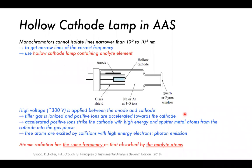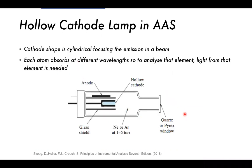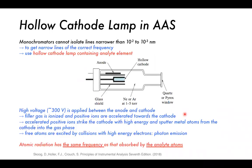In AAS, monochromators cannot isolate lines narrower than 10⁻² or 10⁻³ nanometers, which is why it's very necessary to get the correct frequency. To get narrow lines of the correct frequency, we need to use a hollow cathode lamp containing the analyte element, making the measurement really specific to our analyte.